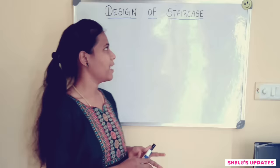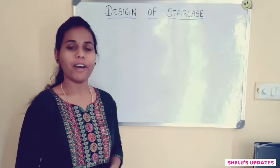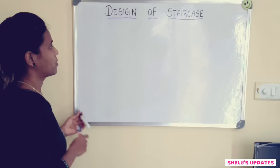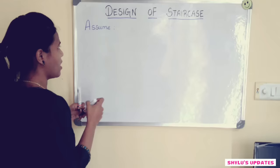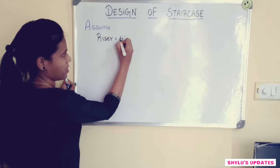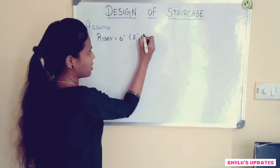Today we are going to learn about the design of a staircase. First of all, we have to assume riser and tread. So for that, I am assuming the riser as 6 inches. You can also assume it as 5 inches or 7 inches, but today in this case I am going to assume it as 6 inches.